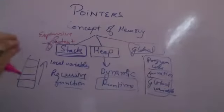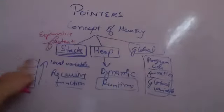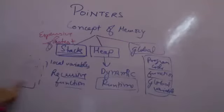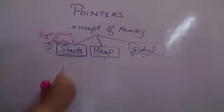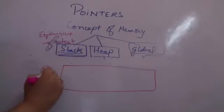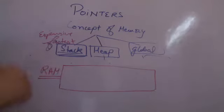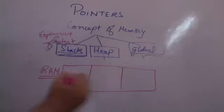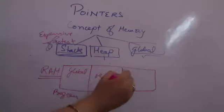Your global function program variables, they are stored in global area. Now what happens is, when you create a program, some particular area of memory, your random access memory, everything is running in primary memory. Some area of RAM is allocated to your program, which is divided in these three parts. So this is your global memory area, this is your heap area, and your stack area.